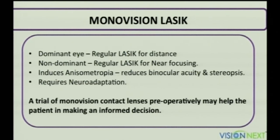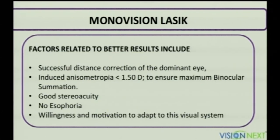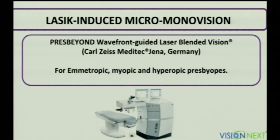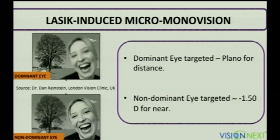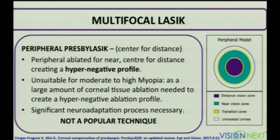Monovision LASIK: the dominant eye is done with regular LASIK for distance, the non-dominant eye for near — inducing an intentional anisometropia. A trial of monovision contact lenses preoperatively helps the patient make an informed decision. The Presbyond platform (Carl Zeiss) targets the dominant eye at plano for distance and non-dominant for near; both eyes undergo non-linear aspheric ablation to induce controlled negative spherical aberration, helping achieve good intermediate vision.